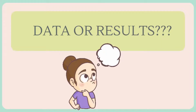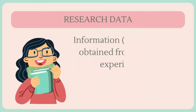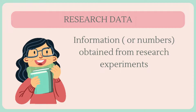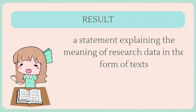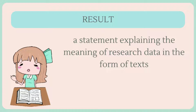Sometimes we get confused about how to differentiate between data and results. Data are information that you collected from your research — numbers or information obtained from research experiments. Whereas results are the text presenting the meaning of your research data — a statement explaining the meaning of research data in the form of text. Another mistake some authors often make is to direct the reader to find a specific table or figure without further explanation. This can confuse readers when they interpret the meaning of the data completely differently from what the authors had in mind. So you should briefly explain your results to make your information clear for the readers.